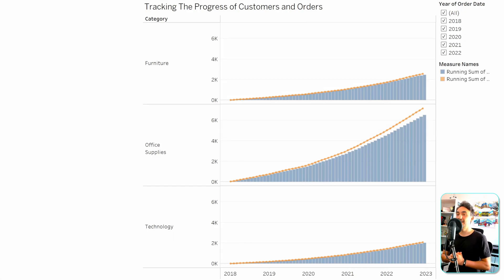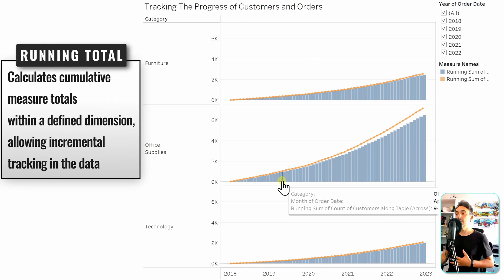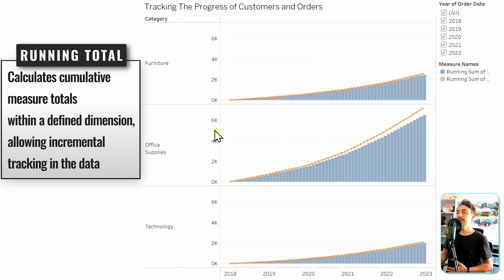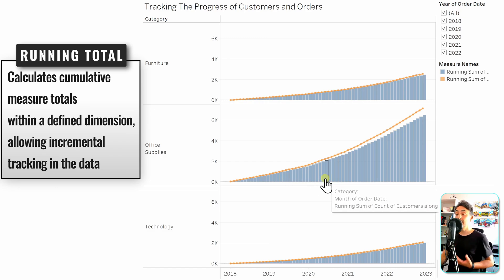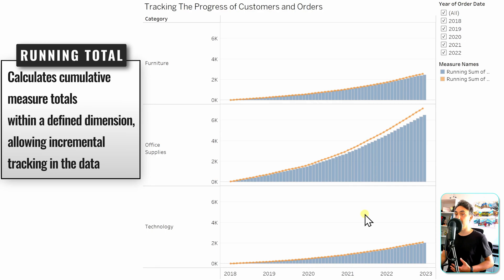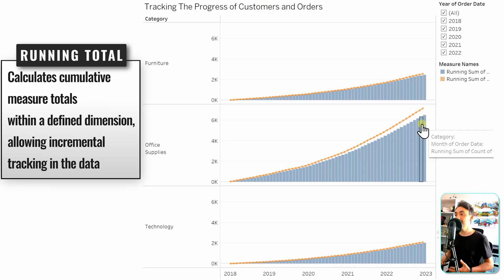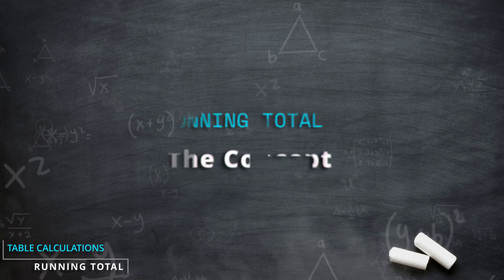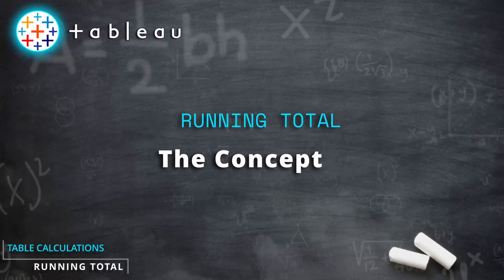Now we're going to talk about a very important and very common table calculation in Tableau: the running total. The running total sums all values as they progress over time. For example, in this view we can track the performance of our business, comparing three different categories of products, and see the development of customers and orders to understand whether our business is growing or declining. Using the running total helps us understand the progress and performance of our business.